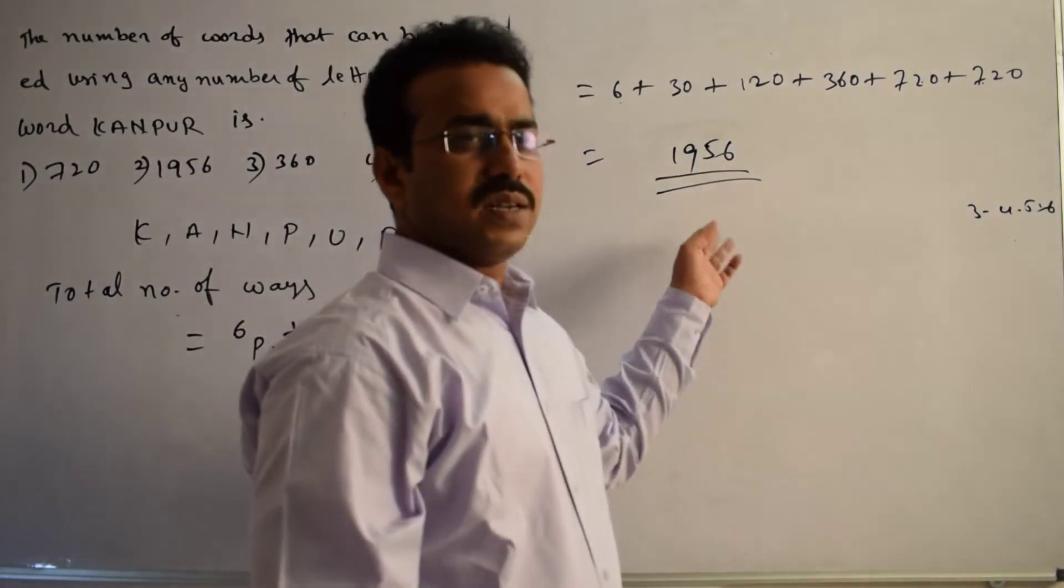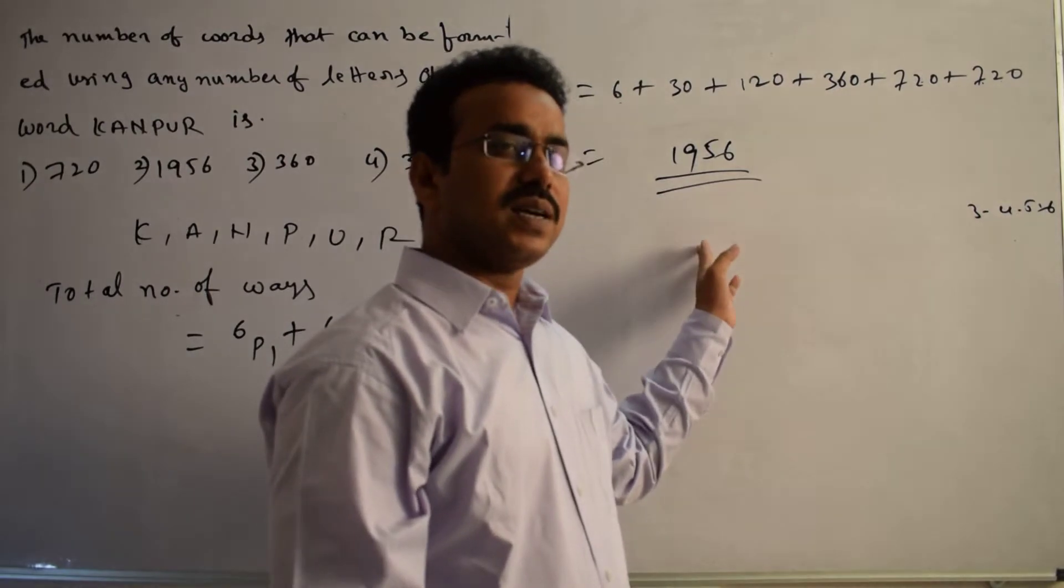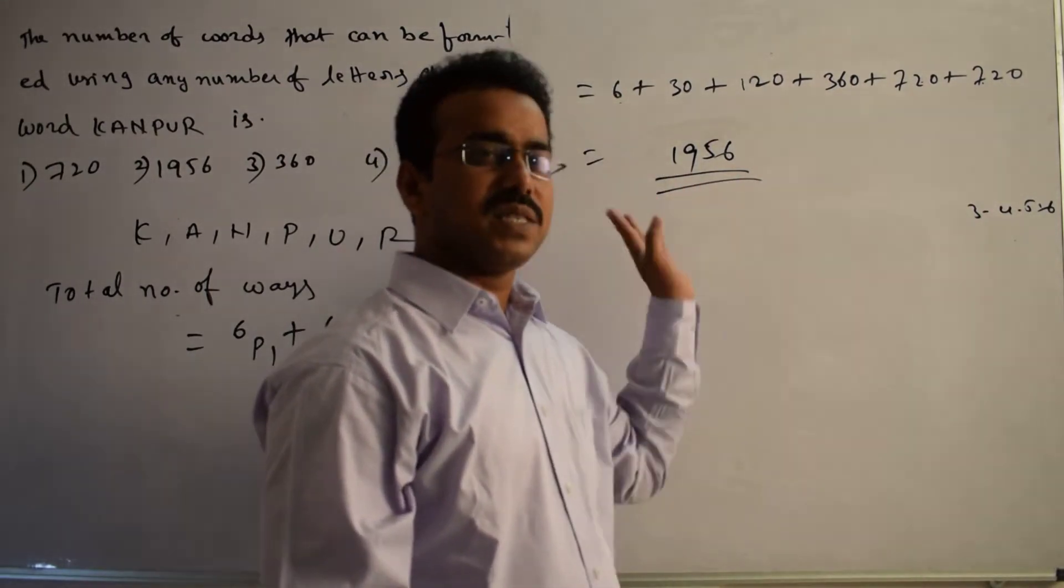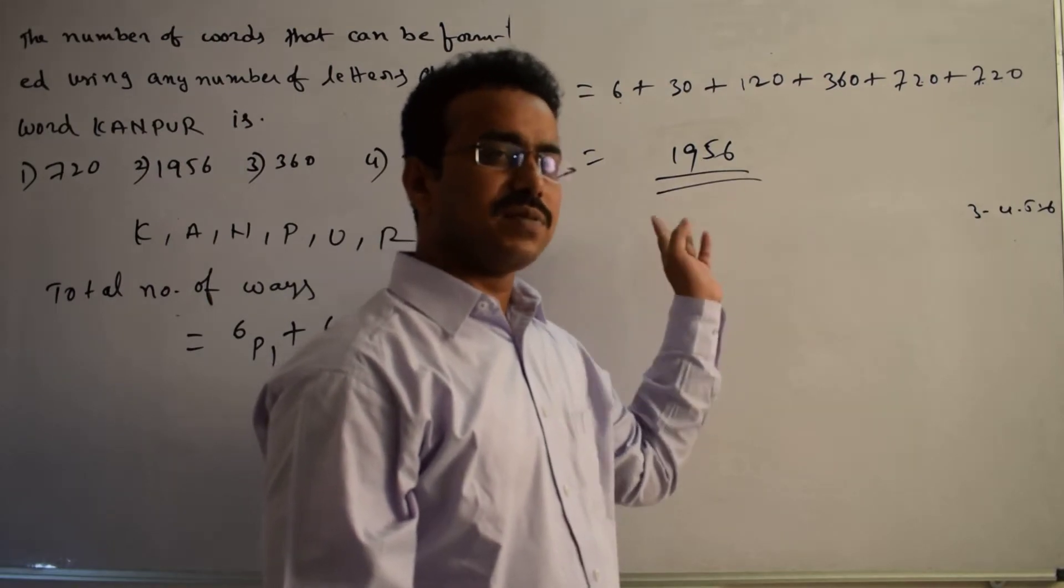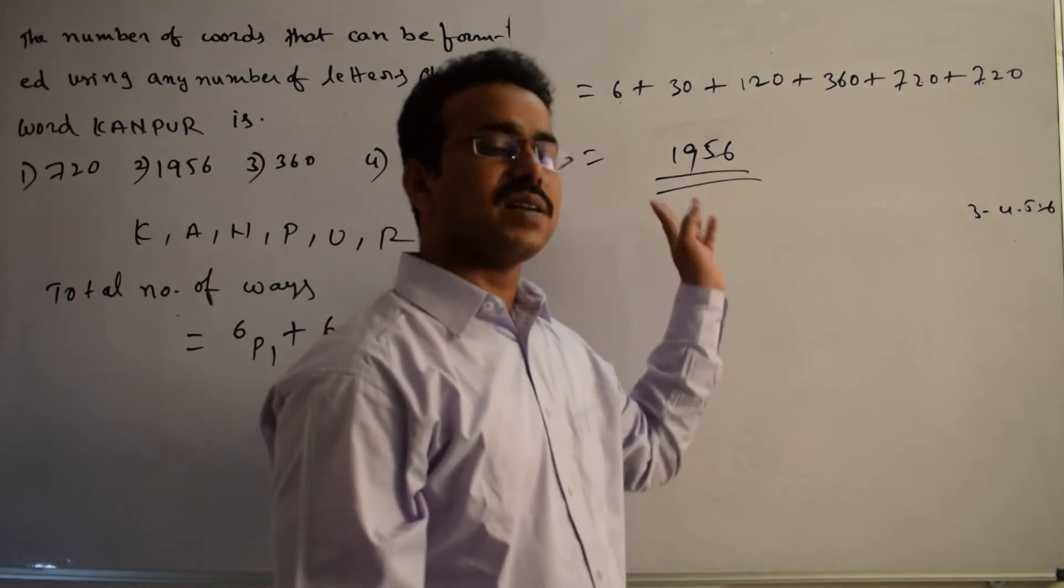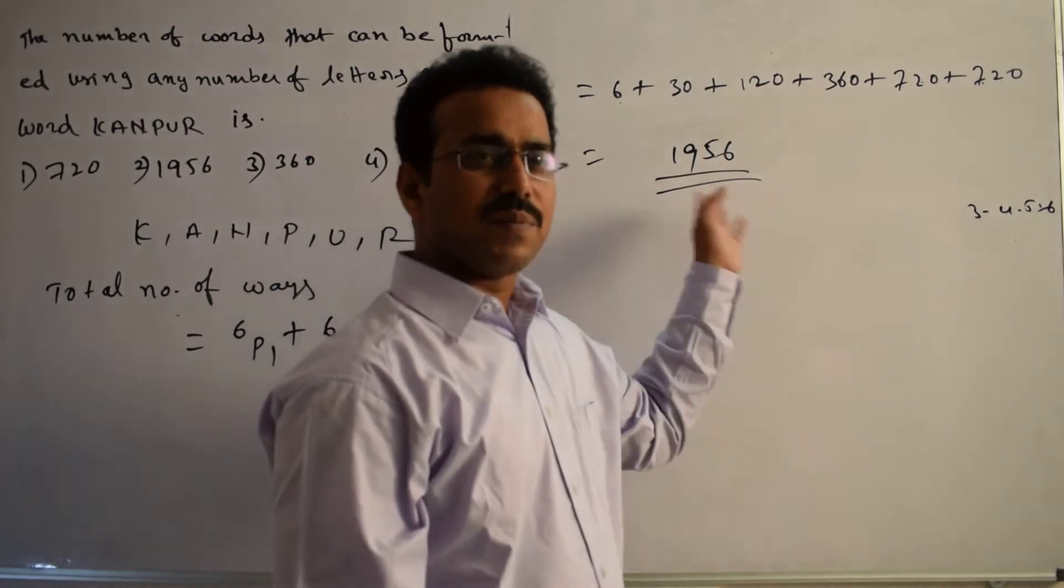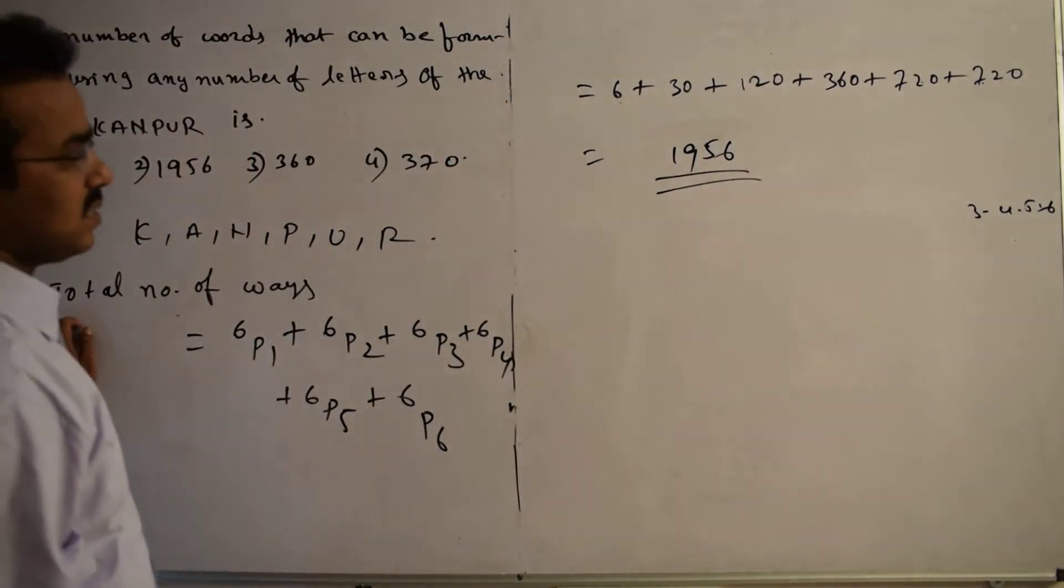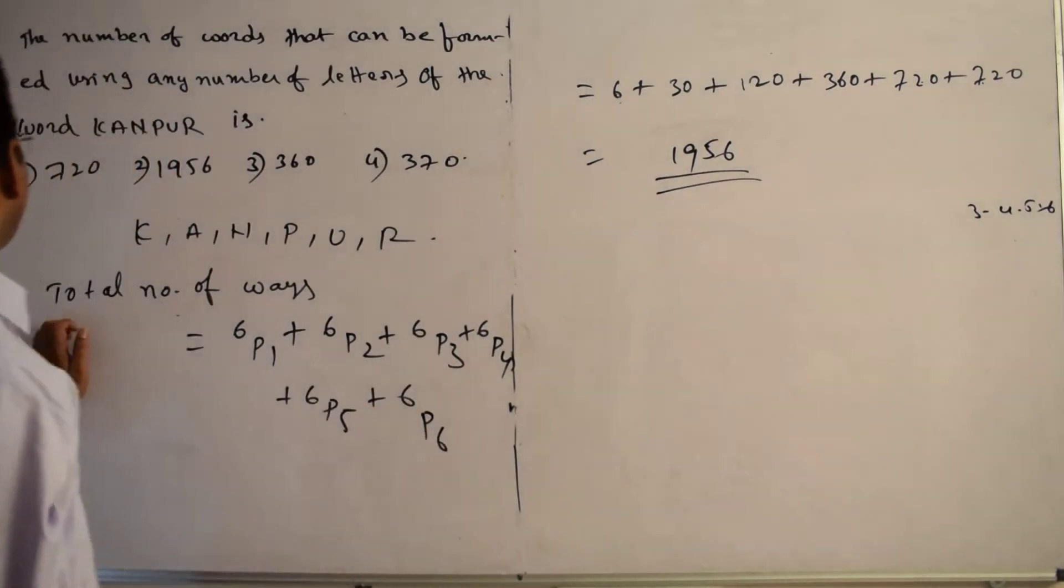So what is that? Total number of words that are formed, any letters of the word Kanpur. Any letters means 1 letter word, 2 letter word, 3 letter word, 4 letter word, 5 letter word, 6 letter word. All are combined and we calculated. See now here, what is the required answer? See, let's compare with the given options.